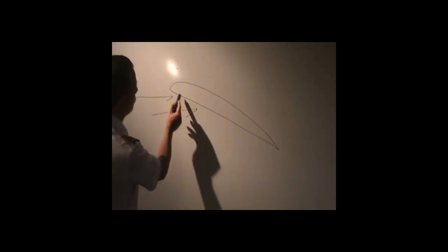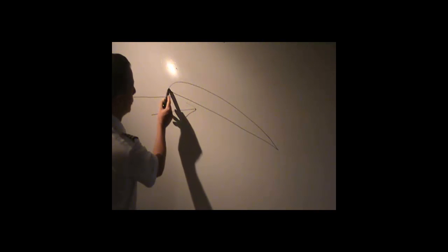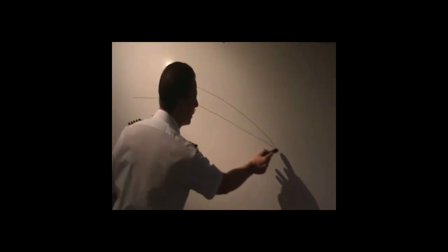Lately we've been talking a lot about angle of attack of an airfoil. And as you recall, the angle of attack is the angle created by the cord line, which runs from our leading edge to our trailing edge, and the relative wind.